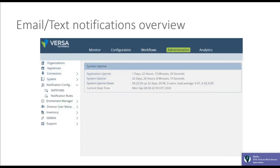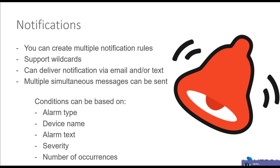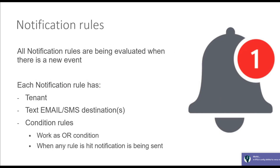In the director screen there is an administration menu, and in administration you will see notifications configuration — that's where you would go to configure them. In more detail about notifications: you can create multiple notification rules, notification rules support wildcards, and you can deliver notifications via email or text messages to multiple destinations. Conditions for sending notifications can be based on alarm type, device type, device name, alarm text, severity, or number of occurrences of a specific event.